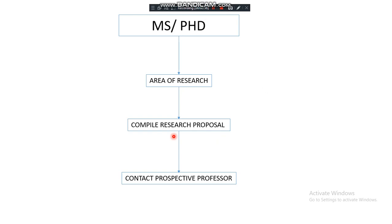After compiling a research proposal, the next stage is to search for professors working in those specific areas. You can visit different university websites in Australia to find out what research trends are ongoing. If a professor is working on the specific area you have chosen, you must contact them by email, sending your research proposal and transcripts to show your interest in becoming their MS or PhD student.